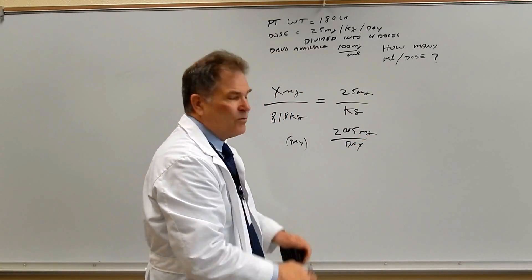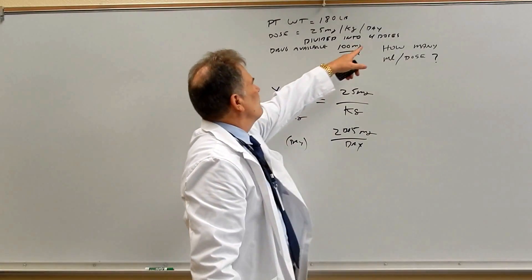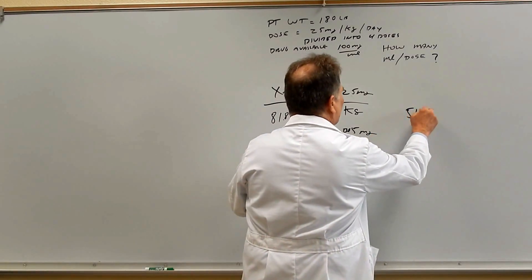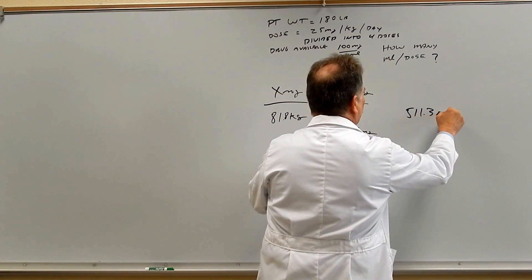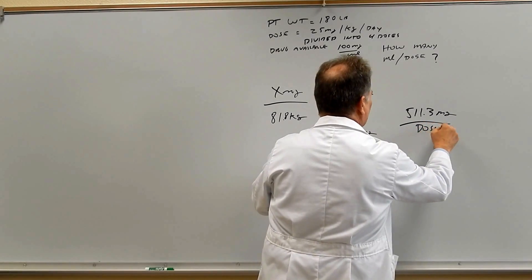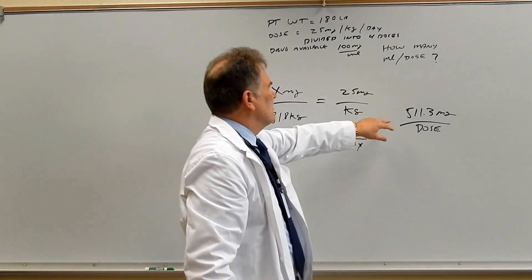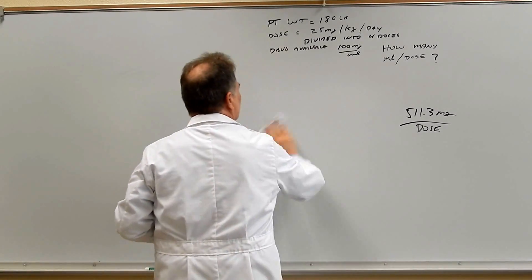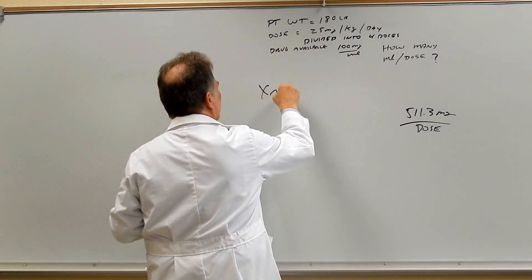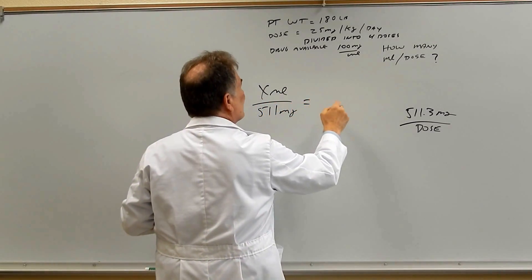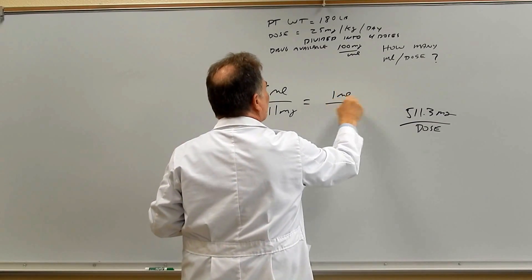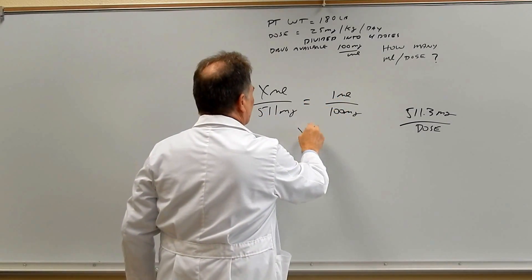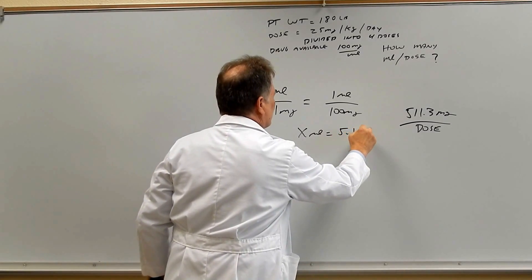Now we figure out milligrams per dose — he's getting four doses per day, so we divide 2,045 by 4, giving us 511.3 milligrams per dose. Finally, we change milligrams into mls per dose: x mls over 511 milligrams equals the known ratio of 1 ml over 100 milligrams. Solving for x gives us 511 times 1 divided by 100, so x equals 5.1 mls.